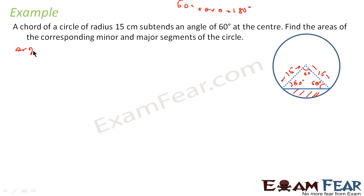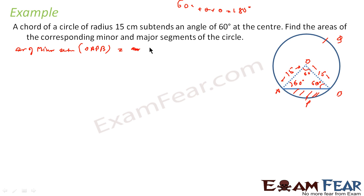Let's solve this. Area of minor sector OAB equals theta/360 × πr² = 60/360 × 3.14 × 15 × 15, which comes out to 117.75 cm². This is the area of the minor sector.